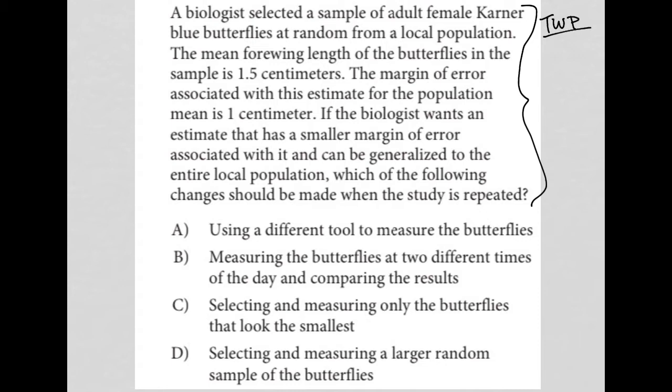The first sentence says a biologist selected a sample of adult female Karner blue butterflies at random from a local population. Nothing quantitative there. Second sentence, the mean forewing length of the butterflies in the sample is 1.5 centimeters. I'm going to write down 1.5 cm equals, I'll just say, length.